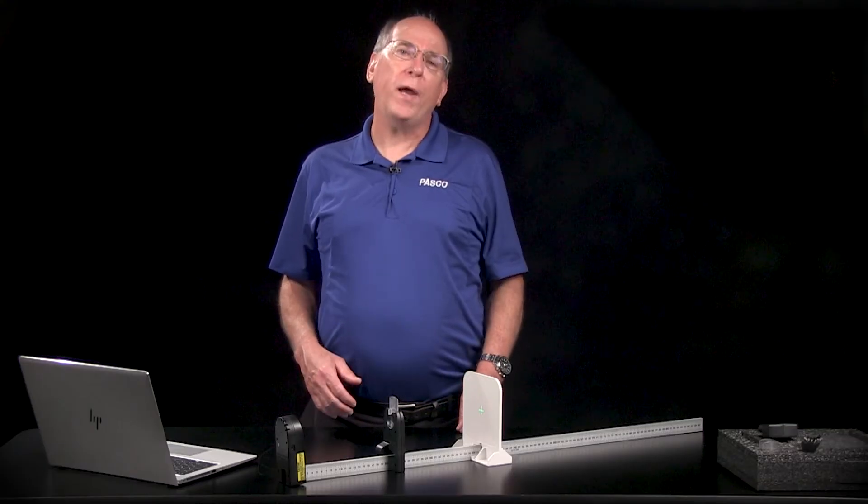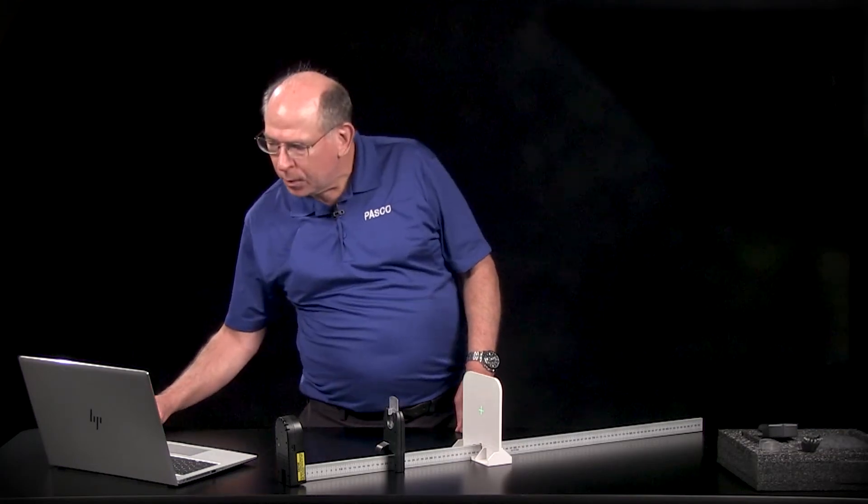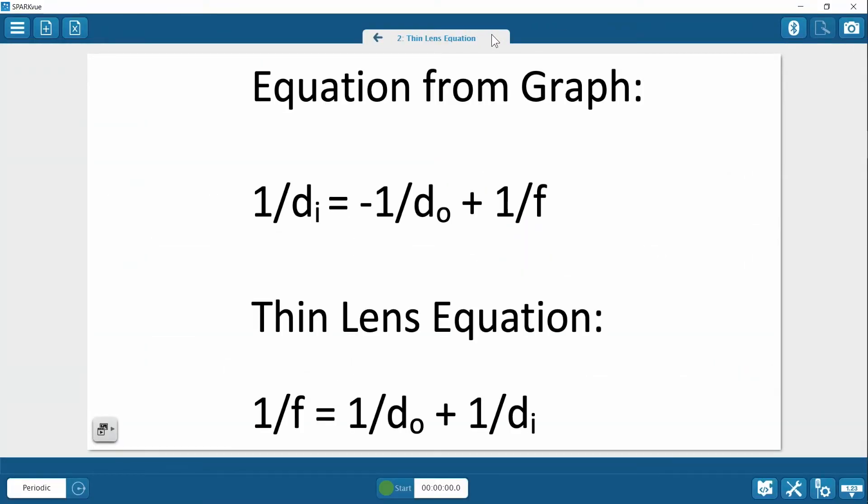Students transform the equation of their graph into the thin lens equation. They figure out this is the equation of their graph: y equals mx plus b. They realize b is 1 over the focal length, and m, the slope, is negative 1. Then they can easily rearrange this into the more familiar form of the thin lens equation.